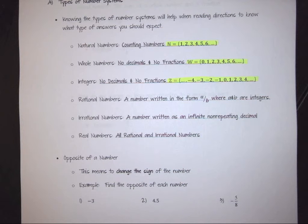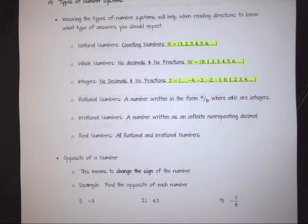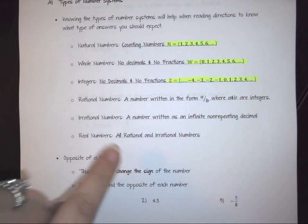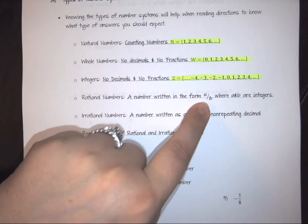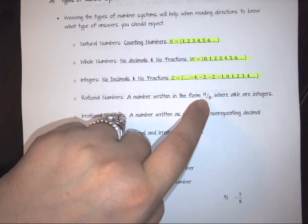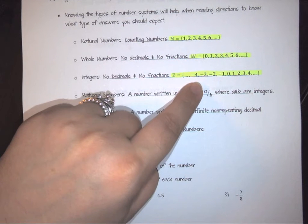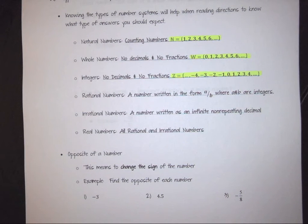This is where the fun begins. Fractions actually have a specific grown-up term called rational numbers. A rational number is a number written in the form a over b, where both a and b are integers. So a rational number is in fraction form — it has a top and a bottom — but both numbers from your fraction have to come from your integer set. It can be any negative or positive number.